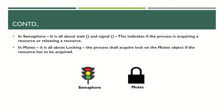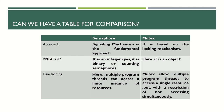In semaphore, there are two operations — wait and signal — which indicate whether a process is acquiring or releasing a resource. In mutex, it is all about locking: the process acquires a lock on the mutex object to access the resource and releases the lock when done. Semaphore uses signals; mutex uses locking. Now looking at the comparison table: the approach for semaphore is signaling; for mutex, it is locking. Semaphore is an integer; mutex is an object.